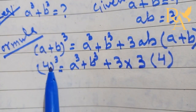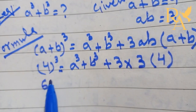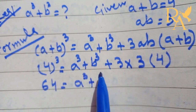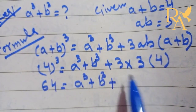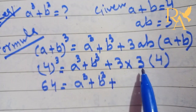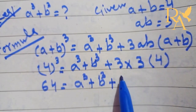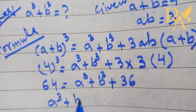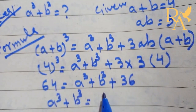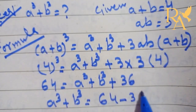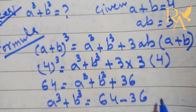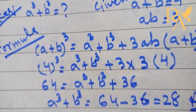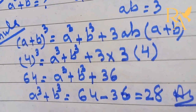4 to the power 3 is equal to 64, so 64 equals A cube plus B cube plus 3 times 3 times 4, which is 36. Therefore, A cube plus B cube is equal to 64 minus 36, which equals 28. This is the answer to the required data.